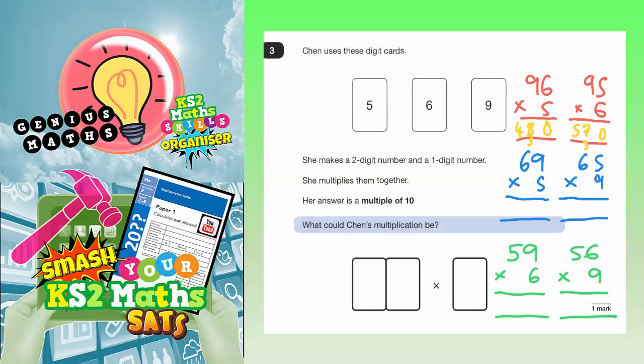Moving on to the blue sums. 9 times 5 is 45. Put the 5 in, carry the 4. 9 times 6 is 54, plus the 4 is 58. 5 nines are 45. Put the 5 in, carry the 4. And 5 sixes are 30, plus the 4 is 34.